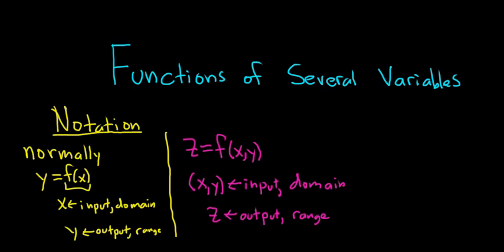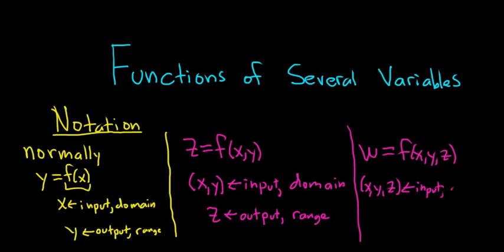You could have x, y, z as input. And in that case, you could let w be your output. So for example, you could even do this: w equals f of x, y, z. And then in this case, (x, y, z) is your input. And so this is in your domain. And then your w is your output and that's in your range.